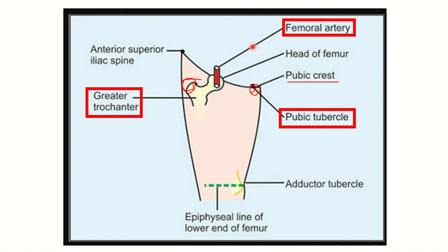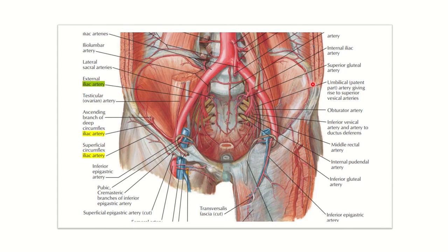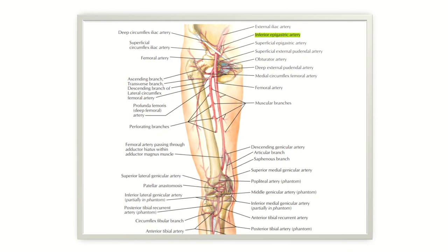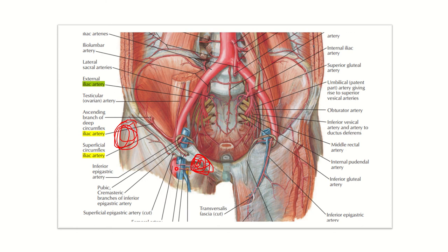We can see some other landmarks here, such as the anterior superior iliac spine, the head of the femur, and the inguinal ligament line. Most importantly, this artery is the femoral artery, located between the greater trochanter and pubic tubercle. In another picture, we can landmark the greater trochanter and the pubic tubercle. Between these two, the vessel present is only the femoral artery and femoral vein.